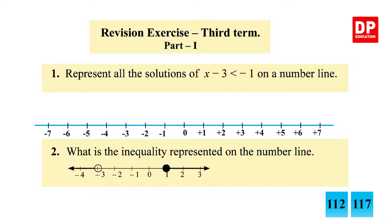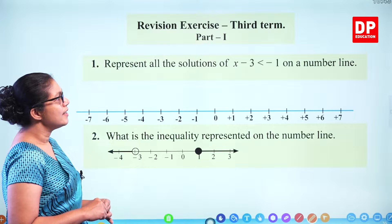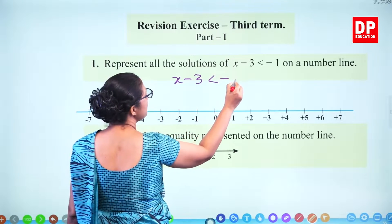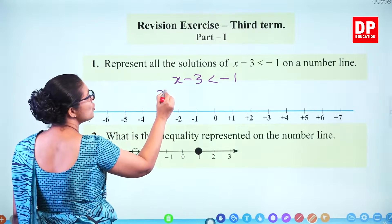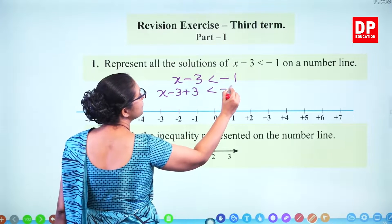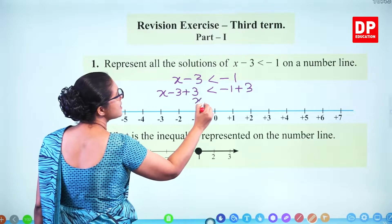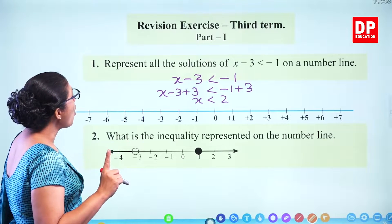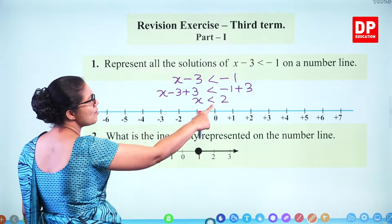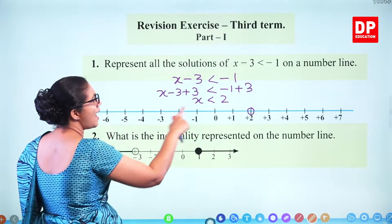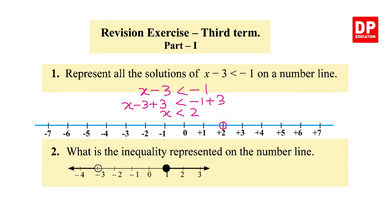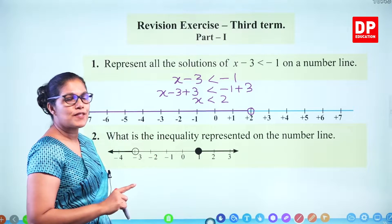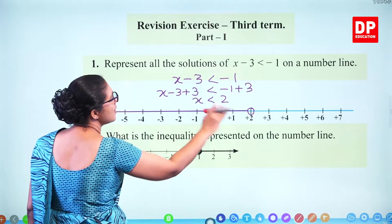Represent all the solutions of x minus 3 less than minus 1 on a number line. First we need to solve this. When you take this inequality, you can see minus 3 — you have to take it to the other side, so you add 3 to both sides. You get x less than 2. So represent all the solutions on the number line: 2 is not included, so we draw an open circle. Less means you go to the left side, so put an arrow or line to the left side. You can get any solution in this region.